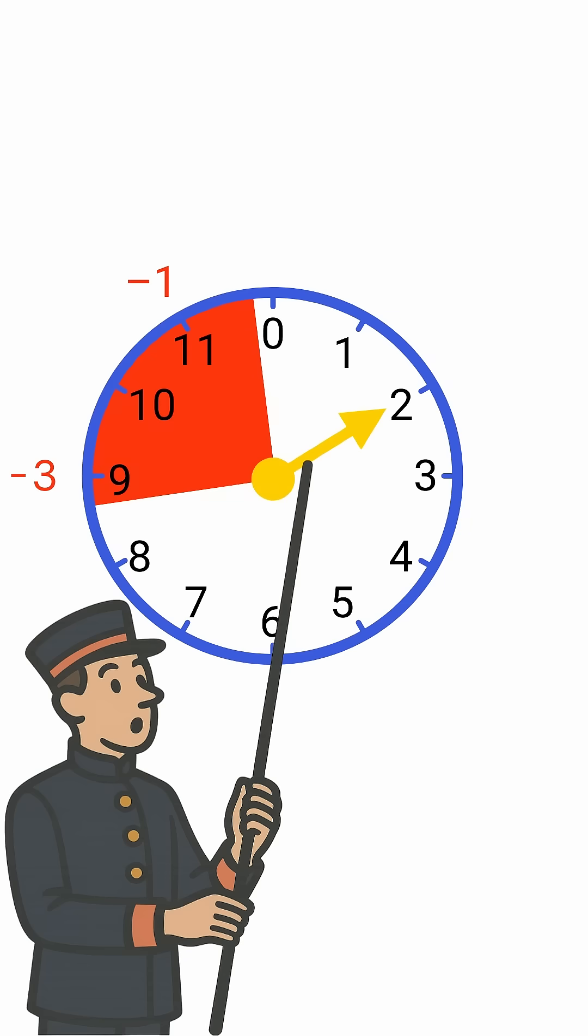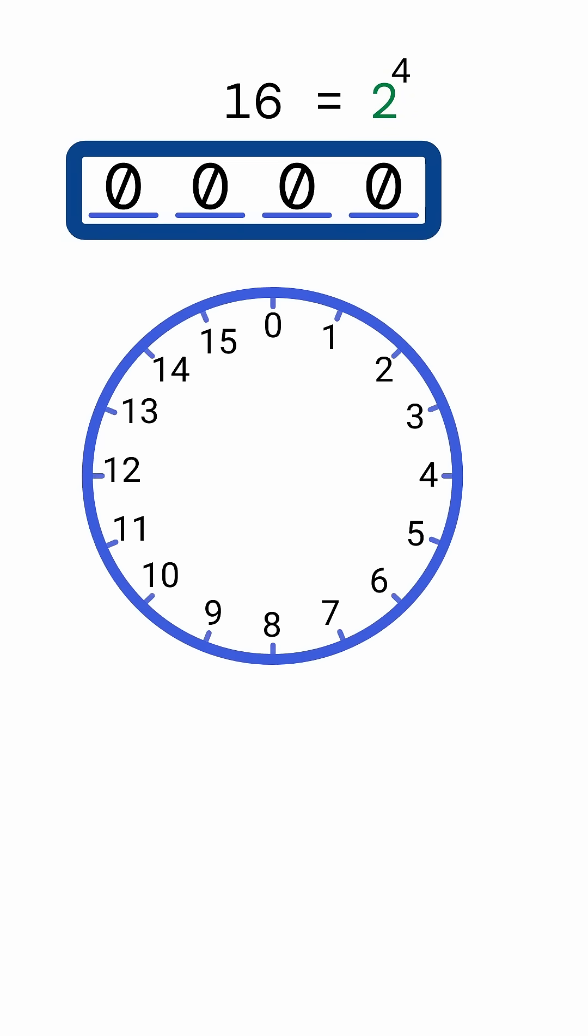Now let's move from clocks back to computers. Imagine a computer that stores integers using 4 bits. That gives us 16 possible values, or 2 to the power of 4 non-negative integers. Let's arrange all of them in a circle, just like the hours on the clock.